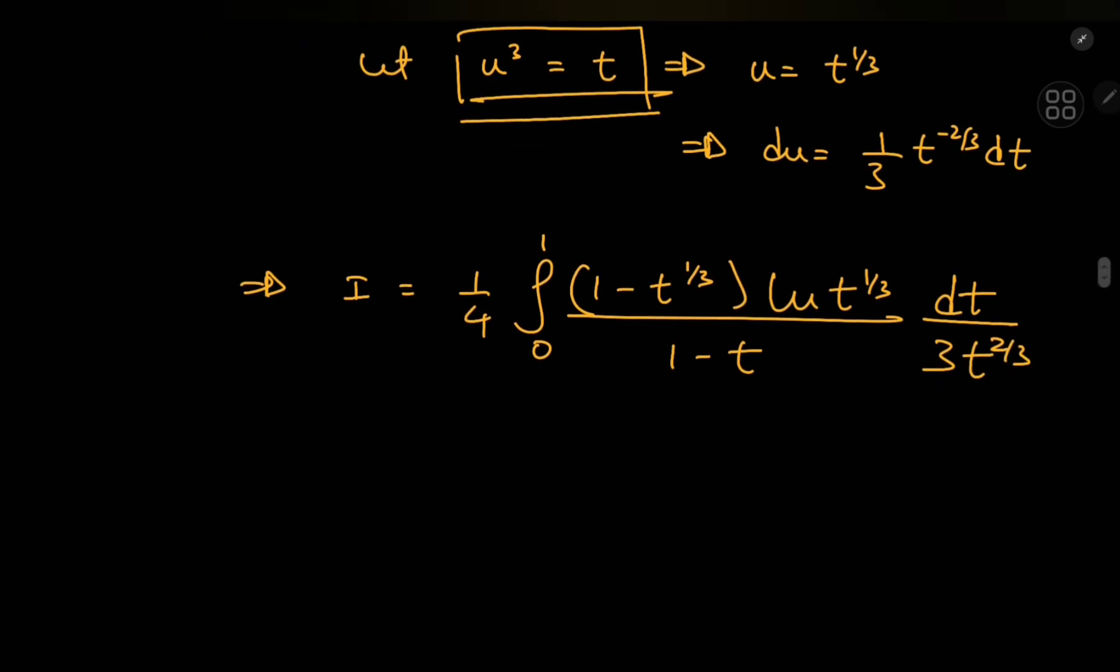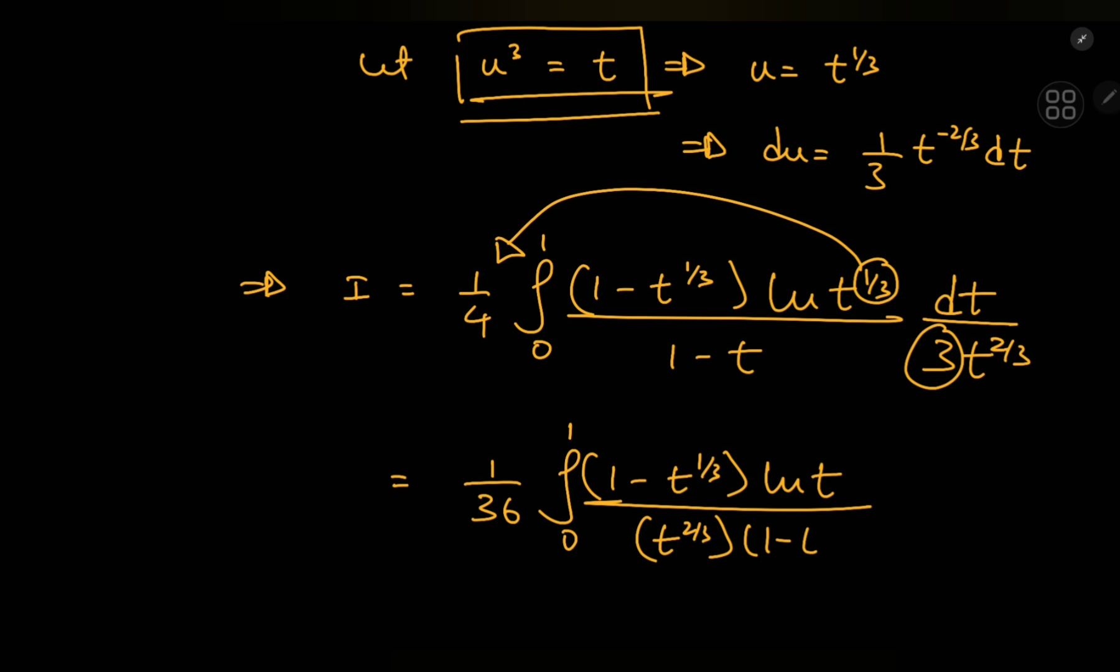Alrighty then. Again using the properties of the logarithm we can write this 1 third as a coefficient. It will be multiplied by this factor of 1 by 4 outside. And we also have another factor of 1 by 3 inside. So we have 1 third times 1 third, that's 1 ninth times 1 by 4 is 1 by 36 times the integral from 0 to 1 of 1 minus t to the 1 third times log t divided by t to the 2 thirds times 1 minus t.